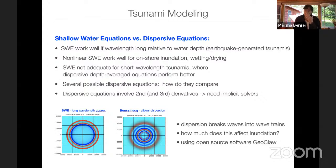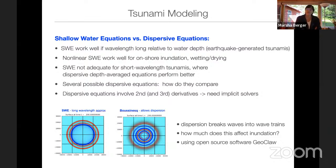The shallow water equations are not dispersive. Both shallow water and dispersive equations are depth averaged, which we prefer since adding a vertical component and increasing the dimension is too expensive. There are several possible dispersive equations, and the issue is that they involve second or even third derivatives, meaning we need implicit solvers. This greatly complicates the use of adaptive mesh refinement — and that's what we've been working on for the last couple of years.